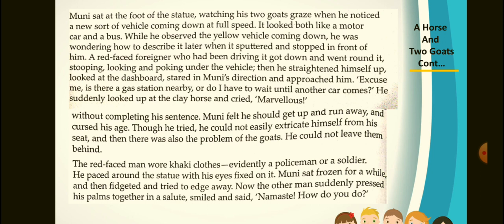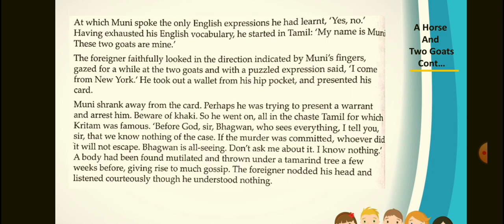'Excuse me, is there a gas station nearby or do I have to wait until another car comes?' He suddenly looked up at the clay horse and cried, 'Marvellous!' Muni felt he should get up and run away and cursed his age — though he tried, he could not easily extricate himself from his seat, and there was also the problem of the goats. The red-faced man wore khaki clothes — evidently a policeman or a soldier. He paced around the statue with his eyes fixed on it. The other man suddenly placed his palms together in a salute, smiled and said, 'Namaste, how do you do?' At which Muni spoke the only English expression he had learned: 'Yes, no.'